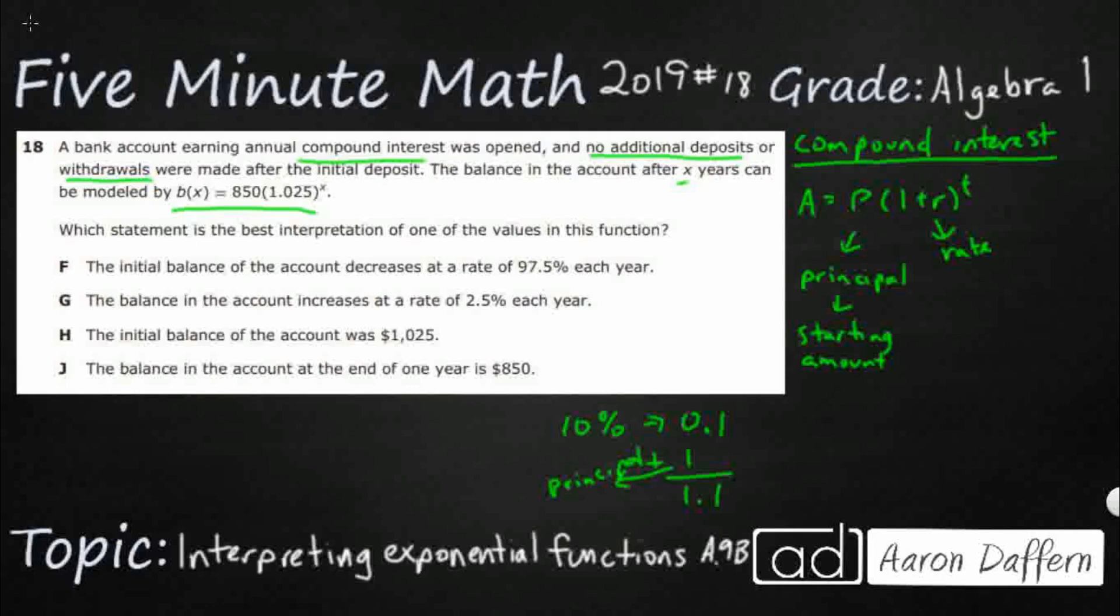And then this t is going to be your time. So typically compound interest is calculated yearly. Sometimes it's monthly. Sometimes it could be another time frame. So how does that stack up with what we have here?